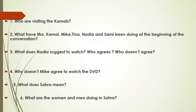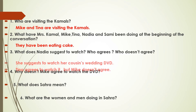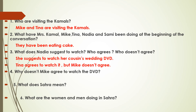Now let's answer these questions about the conversation. Number one: who are visiting the Carmels? Mike and Tina are visiting the Carmels. Number two: what have Mrs. Carmel, Mike, Tina, Nadia, and Sammy been doing at the beginning? They have been eating cake. Number three: what does Nadia suggest to watch, and who agrees or disagrees? She suggests to watch her cousin's wedding DVD. Tina agrees, but Mike doesn't agree.